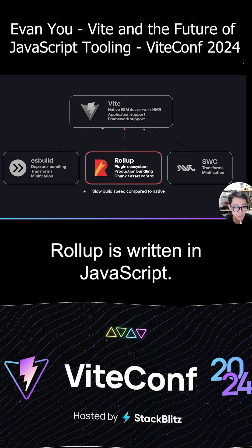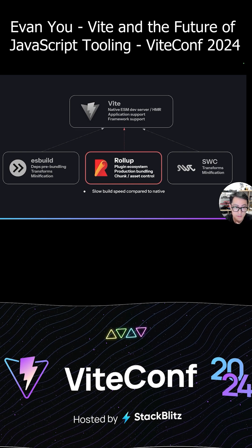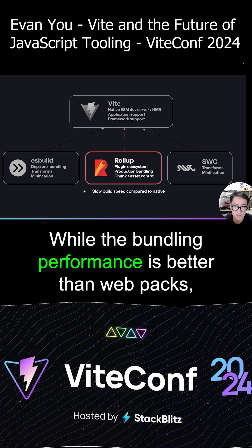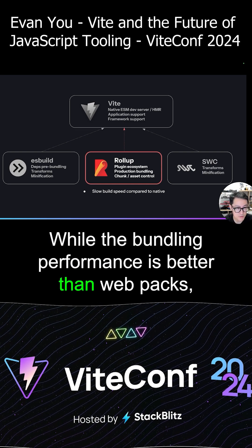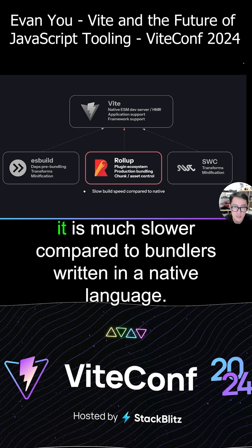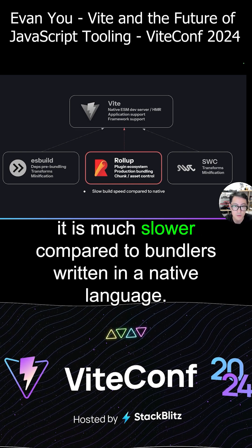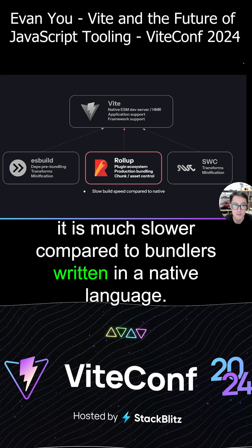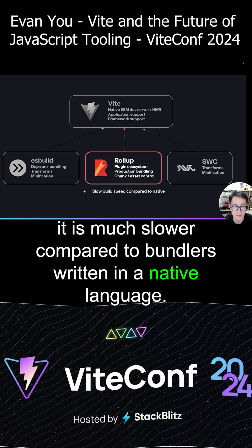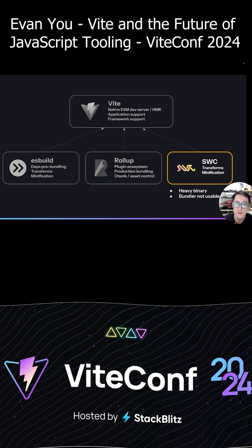However, Rollup is written in JavaScript. While the bundling performance is better than Webpack's, it is much slower compared to bundlers written in a native language.